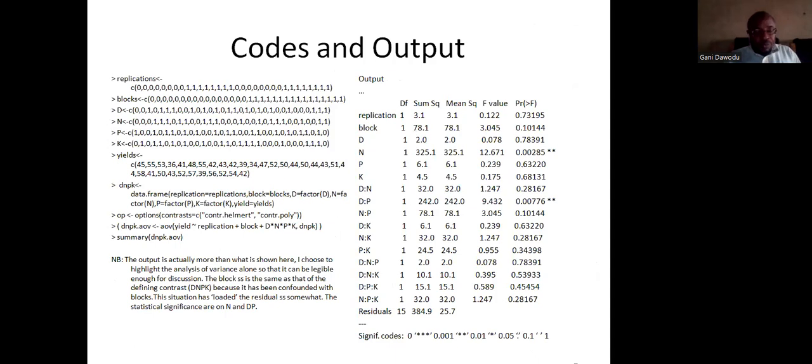With respect to the coding, if you feed in from here to here, it is ready for you. And you can tell it to do the ANOVA. And you can have the summary of the ANOVA here presented. Actually, this is not the entire thing. That's why I have this ellipsis here to tell you that you get something more than this. But I want us to pay attention to the analysis of variance. That's why I'm putting it under focus, that we'll be able to look at it very well. That's why I said the output is actually more than what is shown here. I choose to highlight the analysis of variance so that it can be legible enough for discussion.